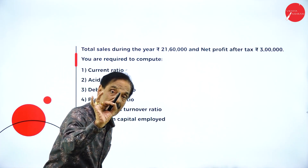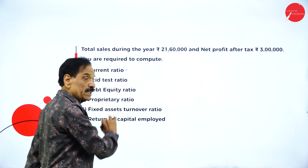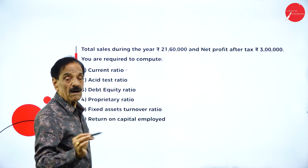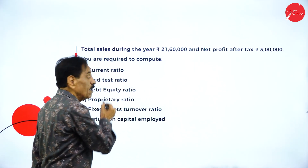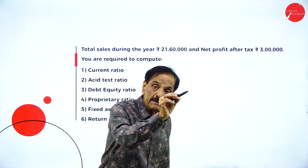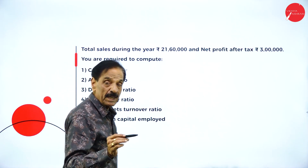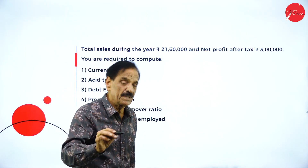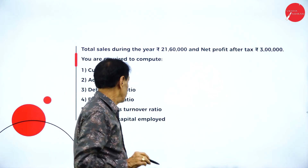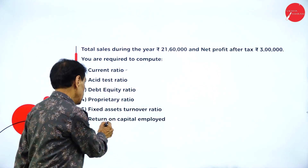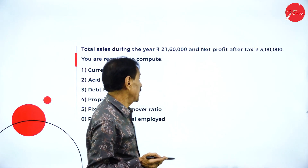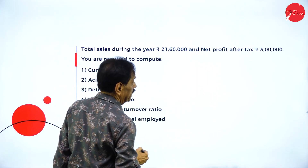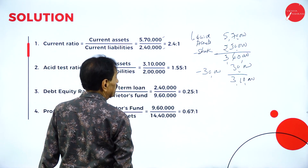To summarise: current ratio is current asset divided by current liability. Acid test or liquid ratio — both are the same — is liquid asset divided by liquid liability, excluding stock from assets and bank overdraft from liabilities. Debt equity ratio is long-term debt divided by equity. Proprietary ratio includes equity share capital, preference capital, and profit and loss account. Fixed asset turnover is sales divided by fixed assets. Return on capital employed is net profit divided by capital employed, where capital employed equals current assets minus current liabilities.